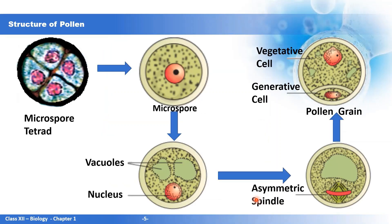The microspore tetrad dissociates into single microspores, which mature to form pollen grains. During this process, an asymmetric spindle is formed, resulting in two unequal daughter cells. The larger cell is the vegetative cell — it has abundant food reserves and an irregularly shaped nucleus. The smaller cell is the generative cell, which floats in the cytoplasm of the vegetative cell; it is spindle-shaped with a dense cytoplasm and nucleus.